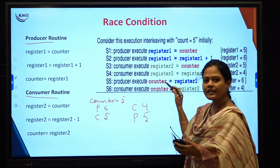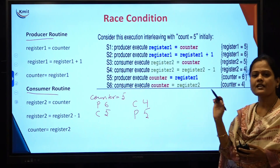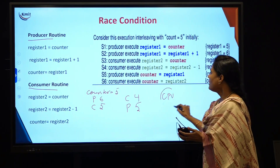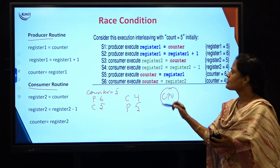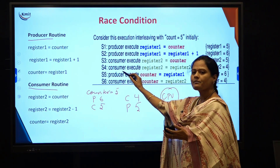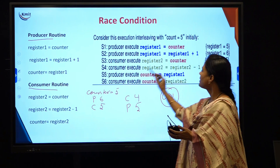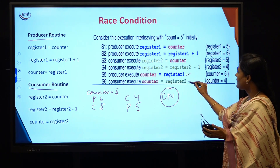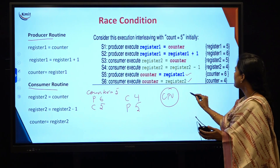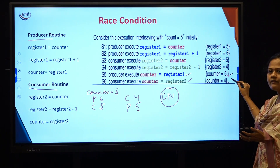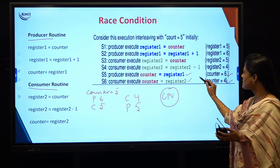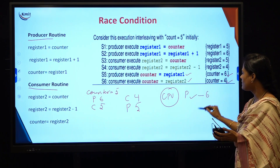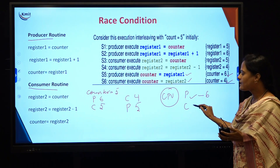When you go for concurrent execution, it does not mean all instructions are executed simultaneously because we have only one CPU. There should be an interleaving of instructions — some instructions of producer executed, followed by some of consumer, then some of producer. When the counter value is 5 initially and we concentrate on statements S5 and S6, the counter value will be either 6 or 4. If the producer updates last, the counter value will be 6. If the consumer updates the register at last, the counter value will be 4.